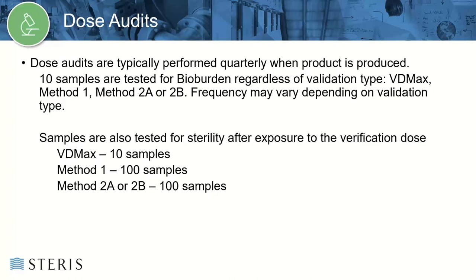After substantiation of the sterilization dose is completed, ISO 11137-2 and ISO 13004 outline the requirement to carry out periodic dose audits to confirm the established sterilization dose is still applicable. Dose audits are typically performed quarterly when the product is produced. Ten samples are tested for bioburden regardless of validation type — VDMax, method 1, method 2A, or 2B. Samples are also tested for sterility after exposure to the verification dose determined during the radiation sterilization validation: 10 samples for VDMax, 100 samples for method 1, and 100 samples for method 2A or 2B.